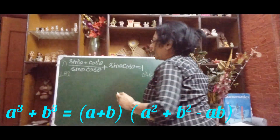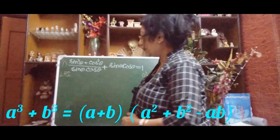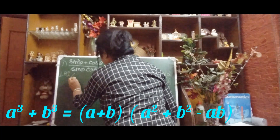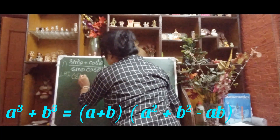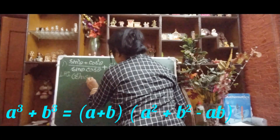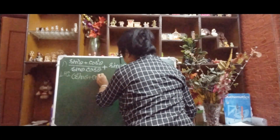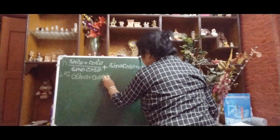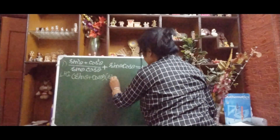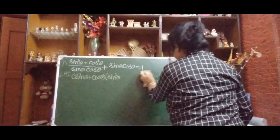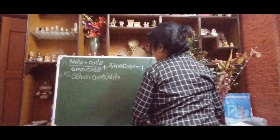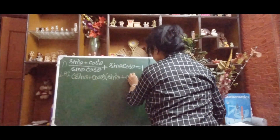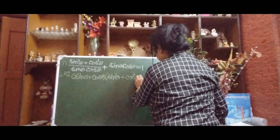Our a is sinθ and b is cosθ. So applying a³ + b³: first write (a + b), which is (sinθ + cosθ), into (a² + b² − ab), which is (sin²θ + cos²θ − sinθcosθ). Let me write this out — sin²θ plus cos²θ.